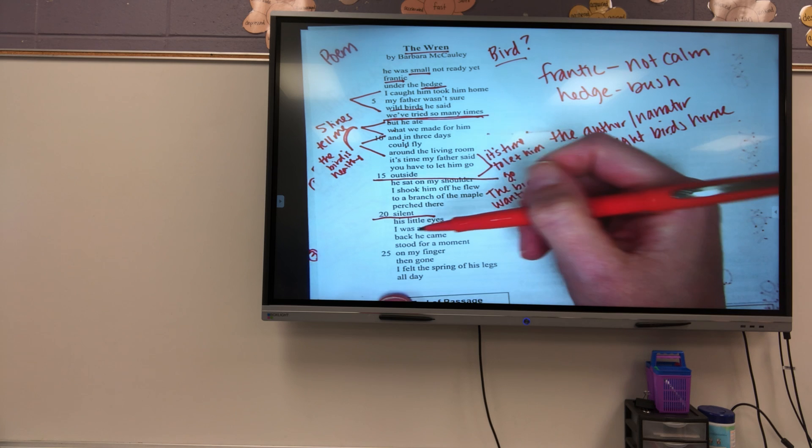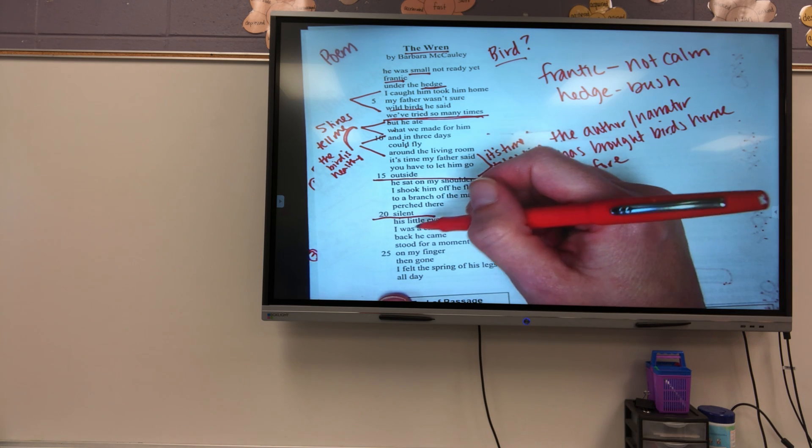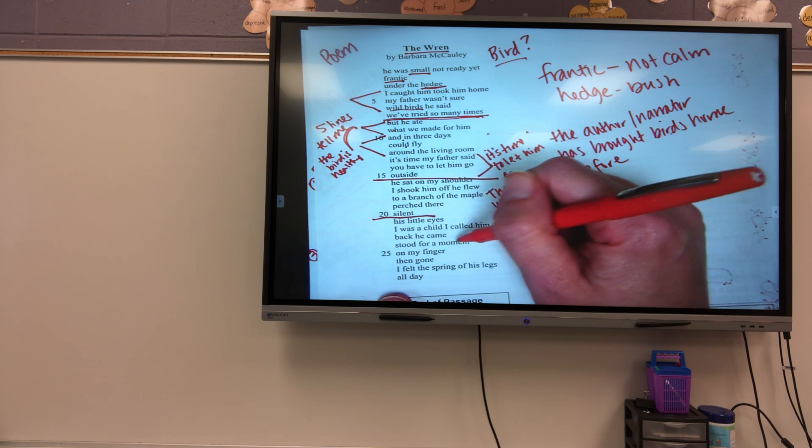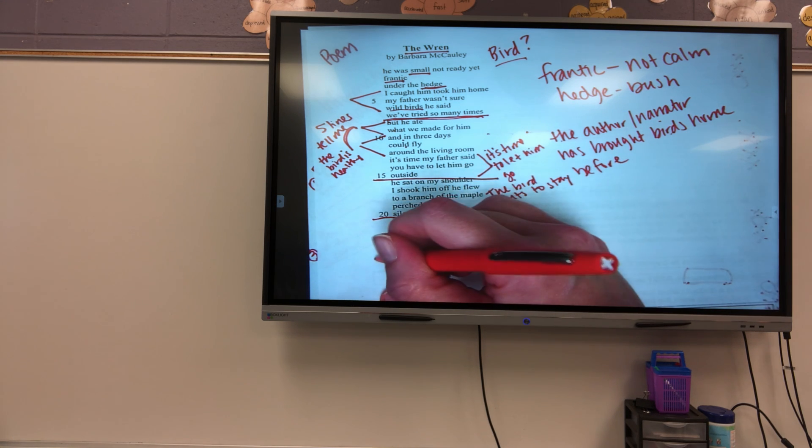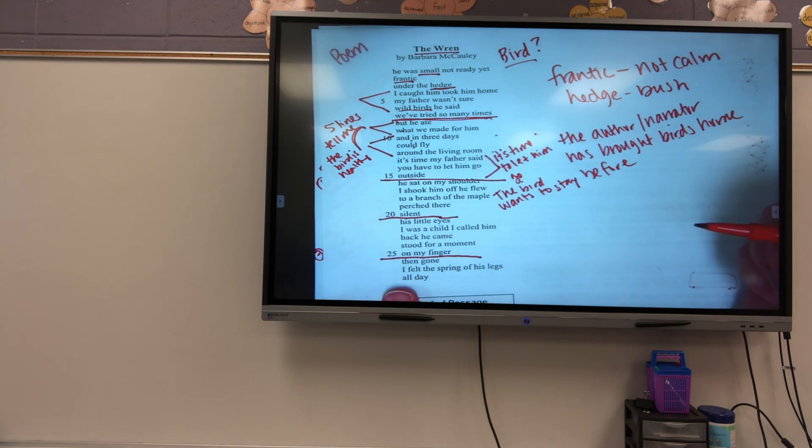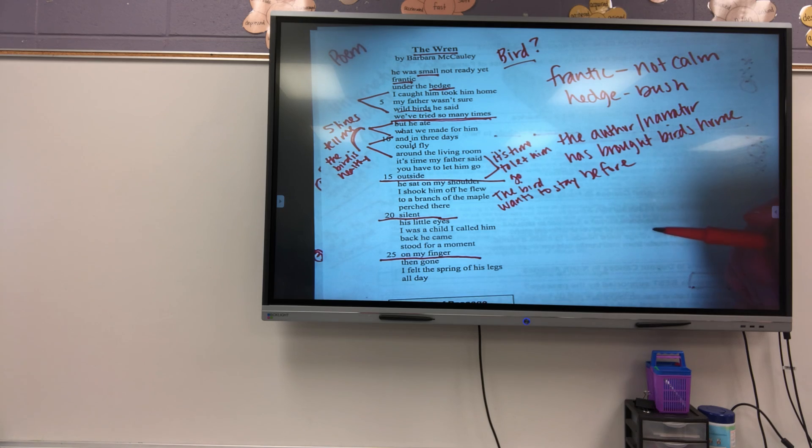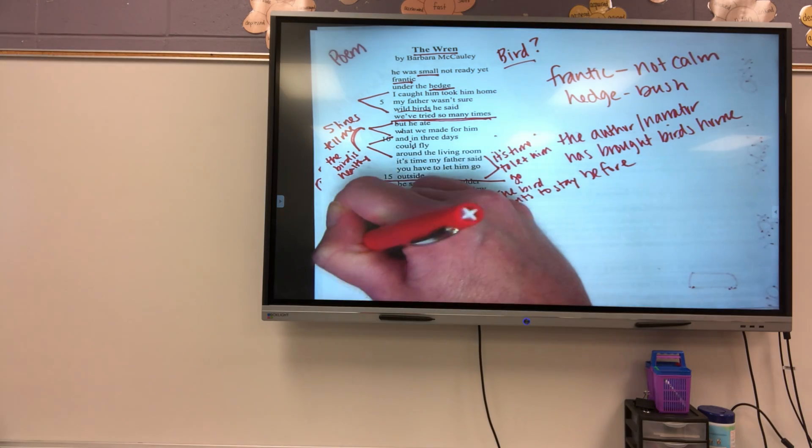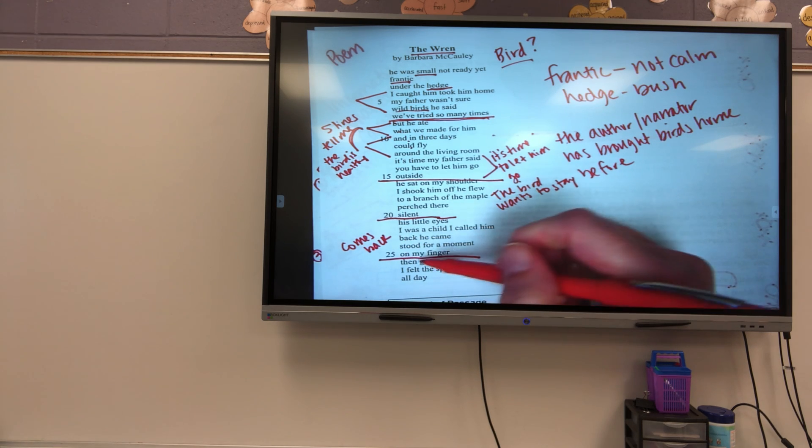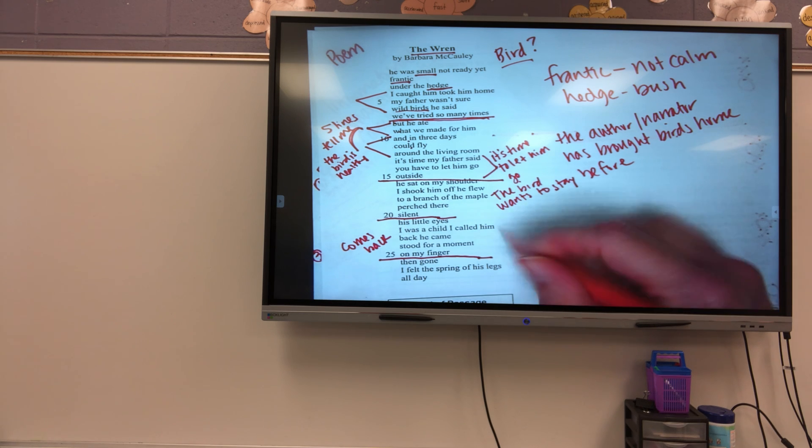His little eyes. I was a child. I called him back. He came. Stood for a moment on my finger. So this tells me that he's able or he understands that he's coming back to her. But then, gone. I felt the spring of his legs all day. So what finally happened in the end? He left. He finally flew away.